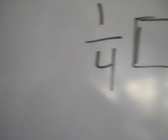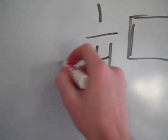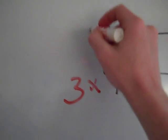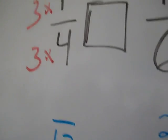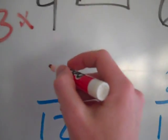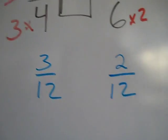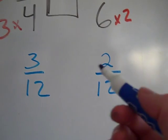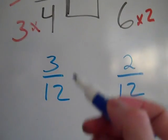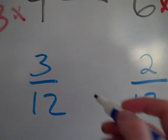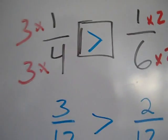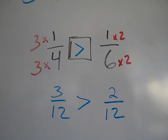Over here, in order to get four to be twelfths I need to do times three, so I'm going to do one times three — the numerator becomes three and the denominator is twelve. Once the denominators are the same you can just look at the numerators and compare them. Three is greater than two. Three-twelfths is more twelfths than two-twelfths, so one-fourth would be greater than one-sixth.